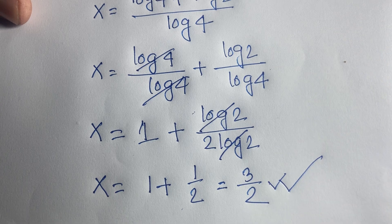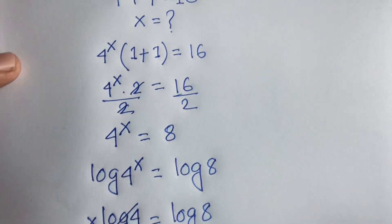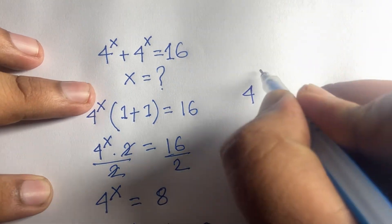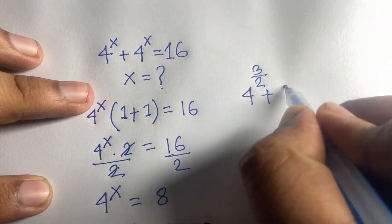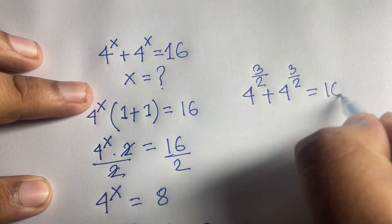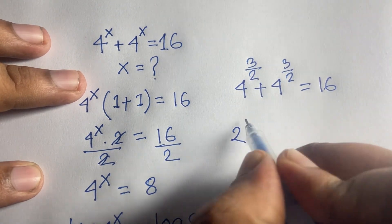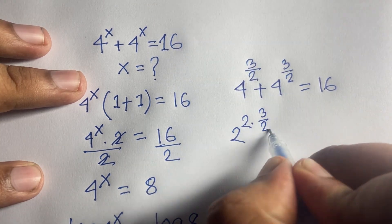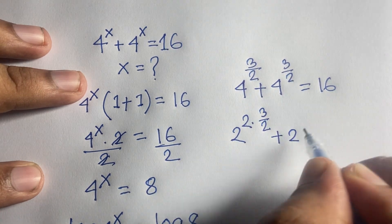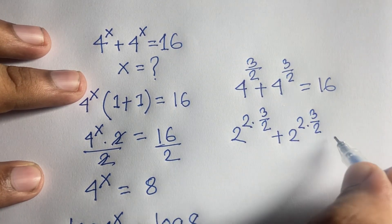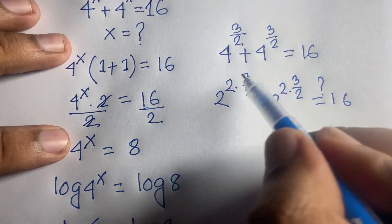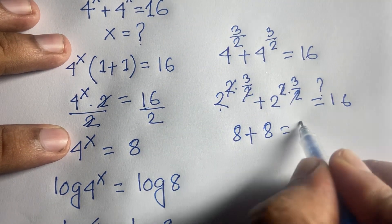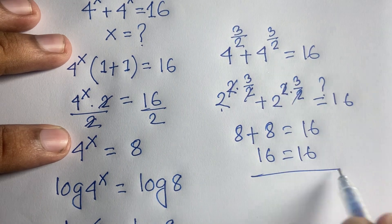Now let's verify: the original question is 4 to the power x plus 4 to the power x equals 16. Substituting x equals 3/2, we get 4 to the power 3/2 plus 4 to the power 3/2. Since 4 equals 2 squared, we have (2 squared) to the power 3/2, which equals 2 to the power 3, which is 8. So 8 plus 8 equals 16, and 16 equals 16. Confirmed!